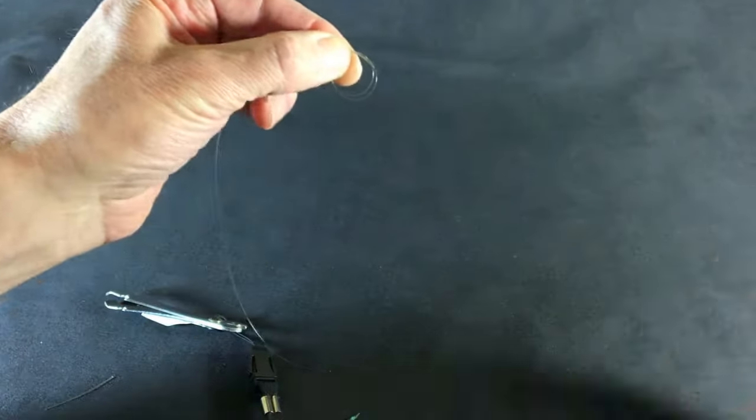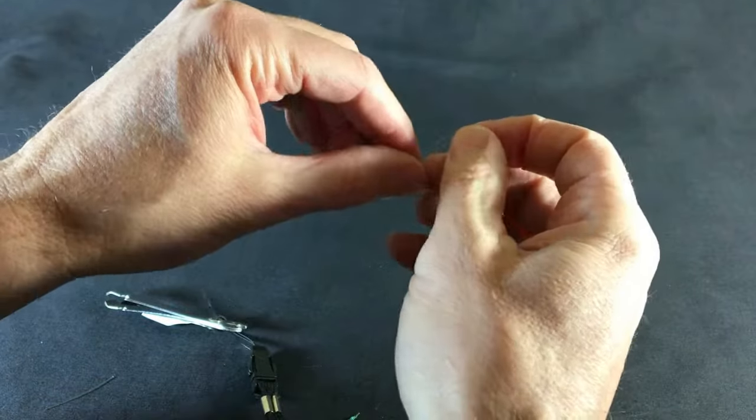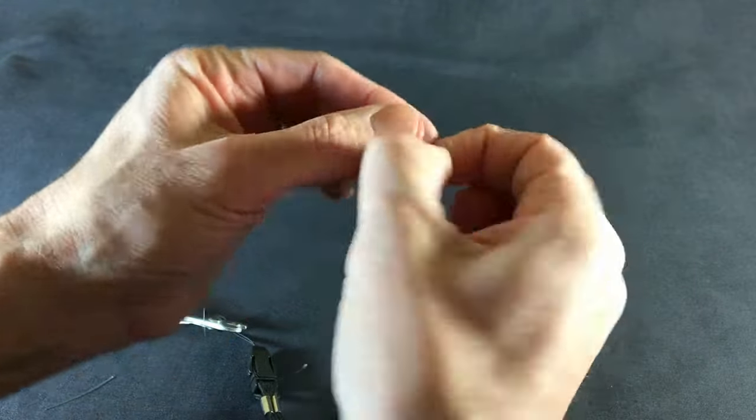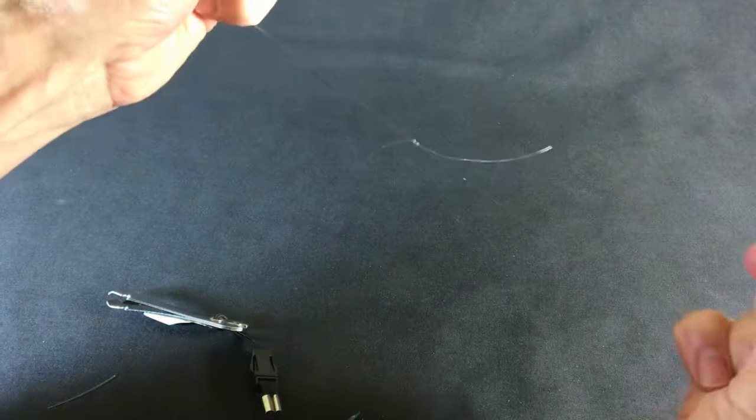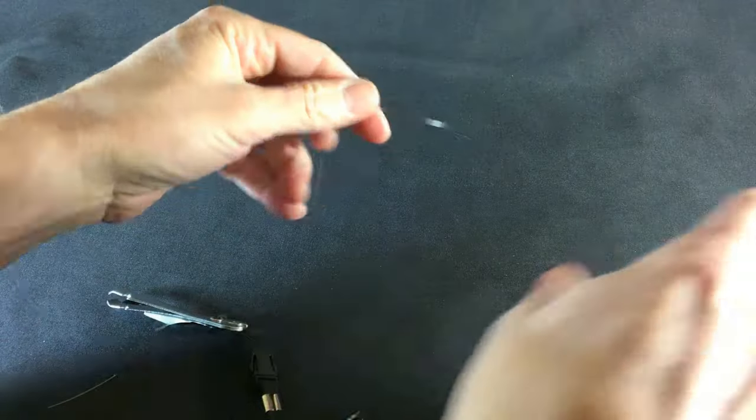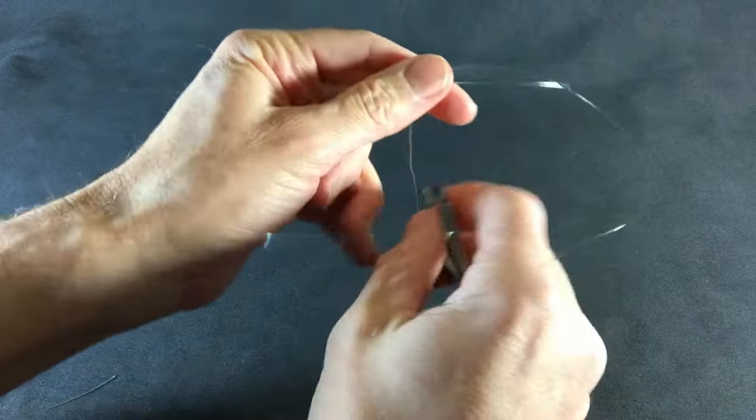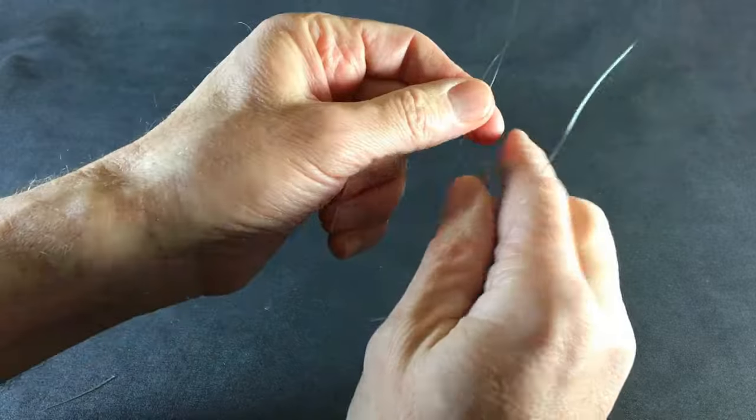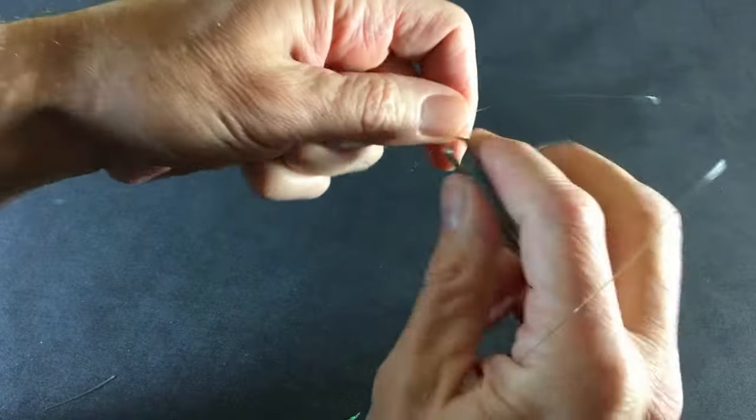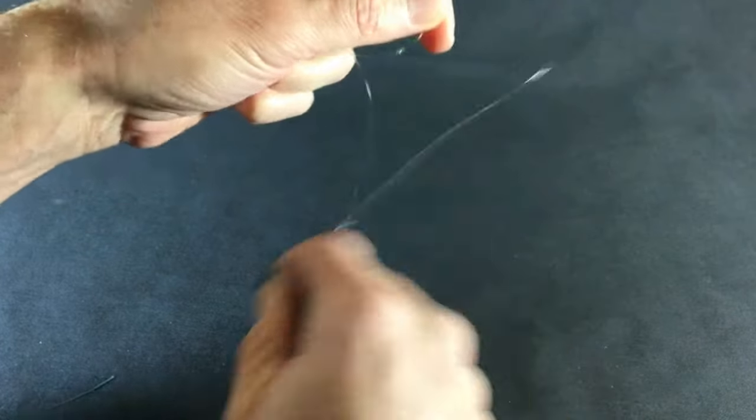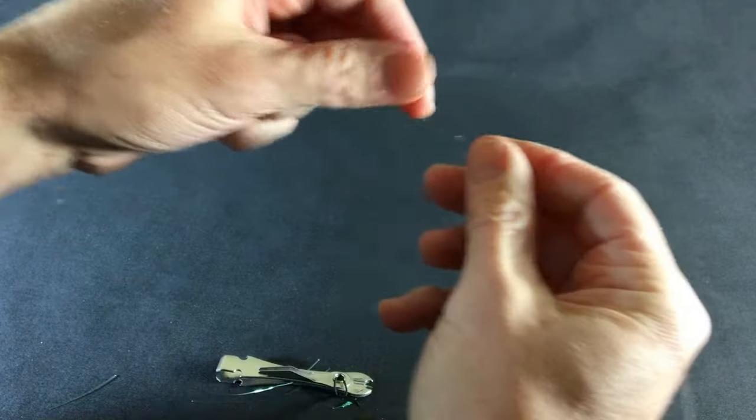Pass your line through once. Pass it through again. Wet it. Draw all four down together. Pull it tight. Trim your tag ends. And there's a double surgeon's.